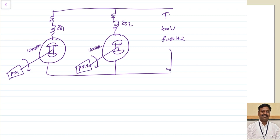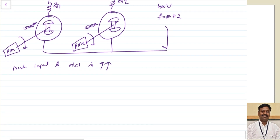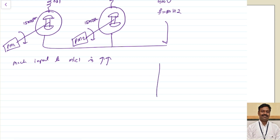Now what happens when the mechanical input to machine 1 is increased? Initially when machines are operating under ideal conditions, both EMFs are the same - E1 and E2 are opposite to each other so the net resultant is equal to zero, and there is no synchronizing component of current.